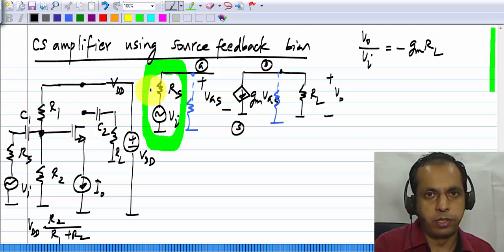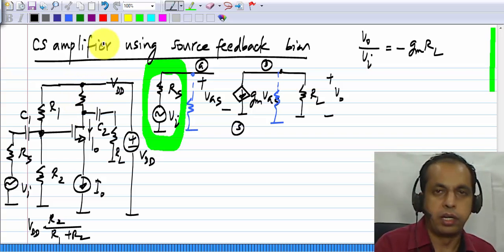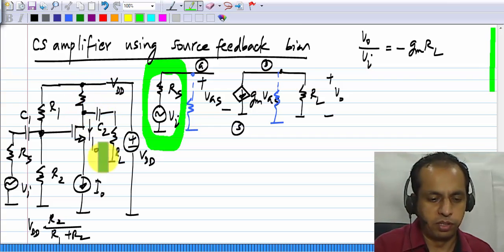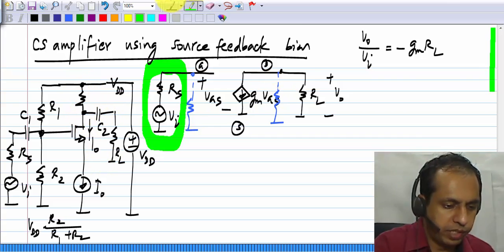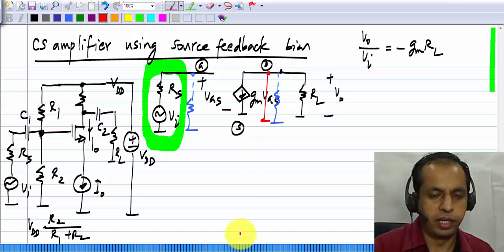So, the drain has to be connected to Vdd through a bias resistor Rd. It has to get connected somewhere, so that this I naught has some path to flow, and it has to go to Vdd, where it cannot be connected directly to Vdd, because in that case, that is like shorting the output of the amplifier to ground.